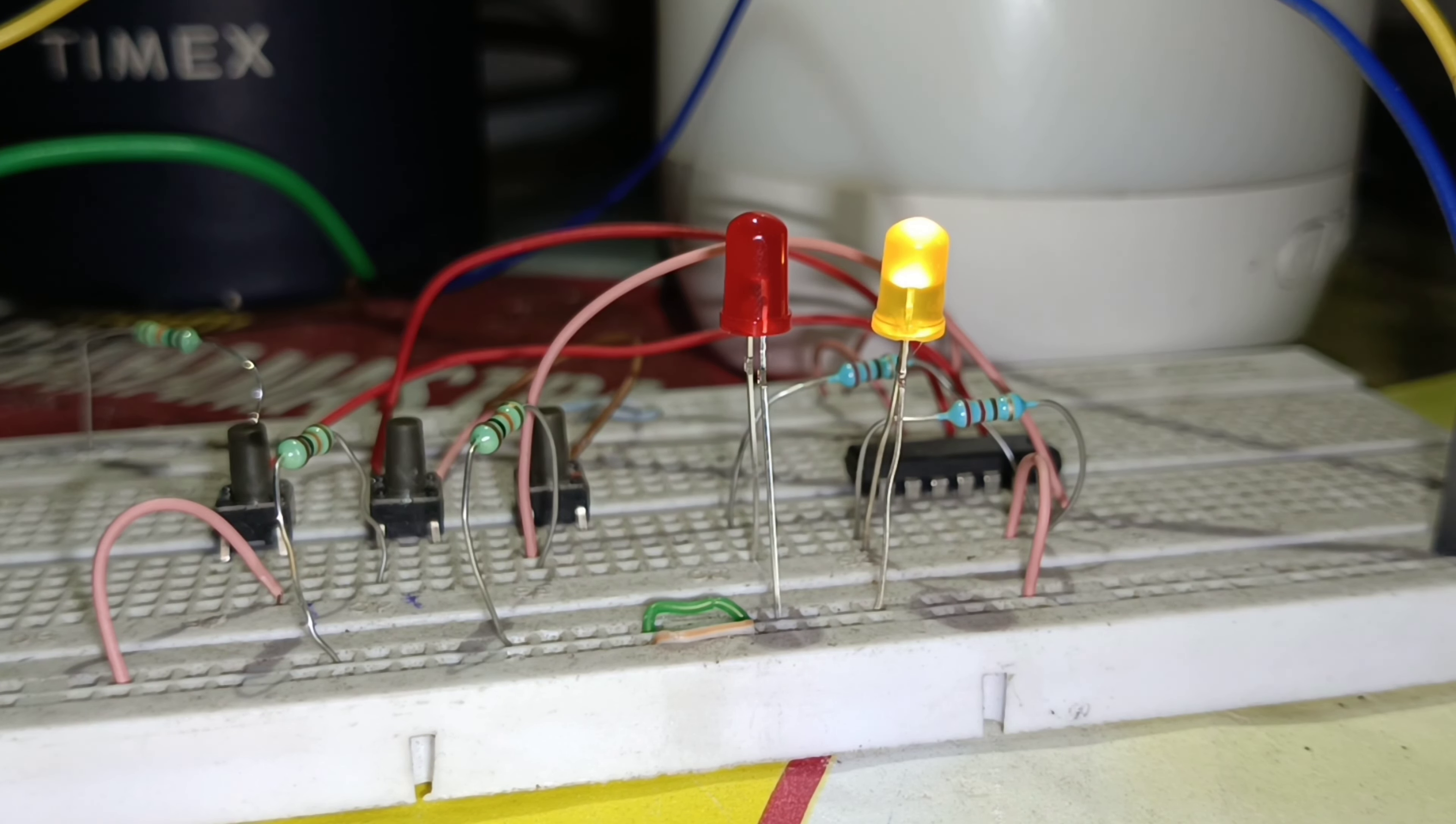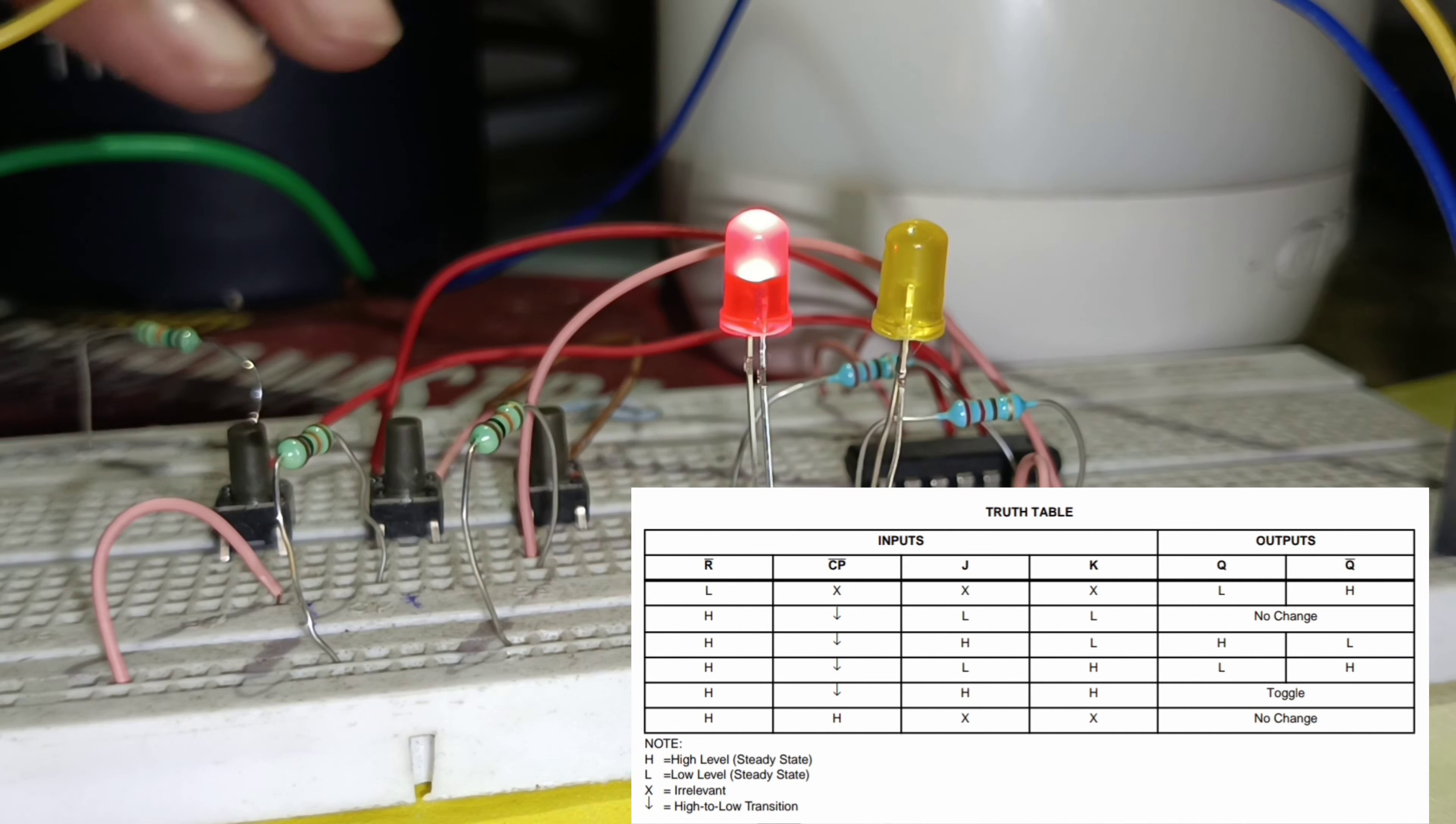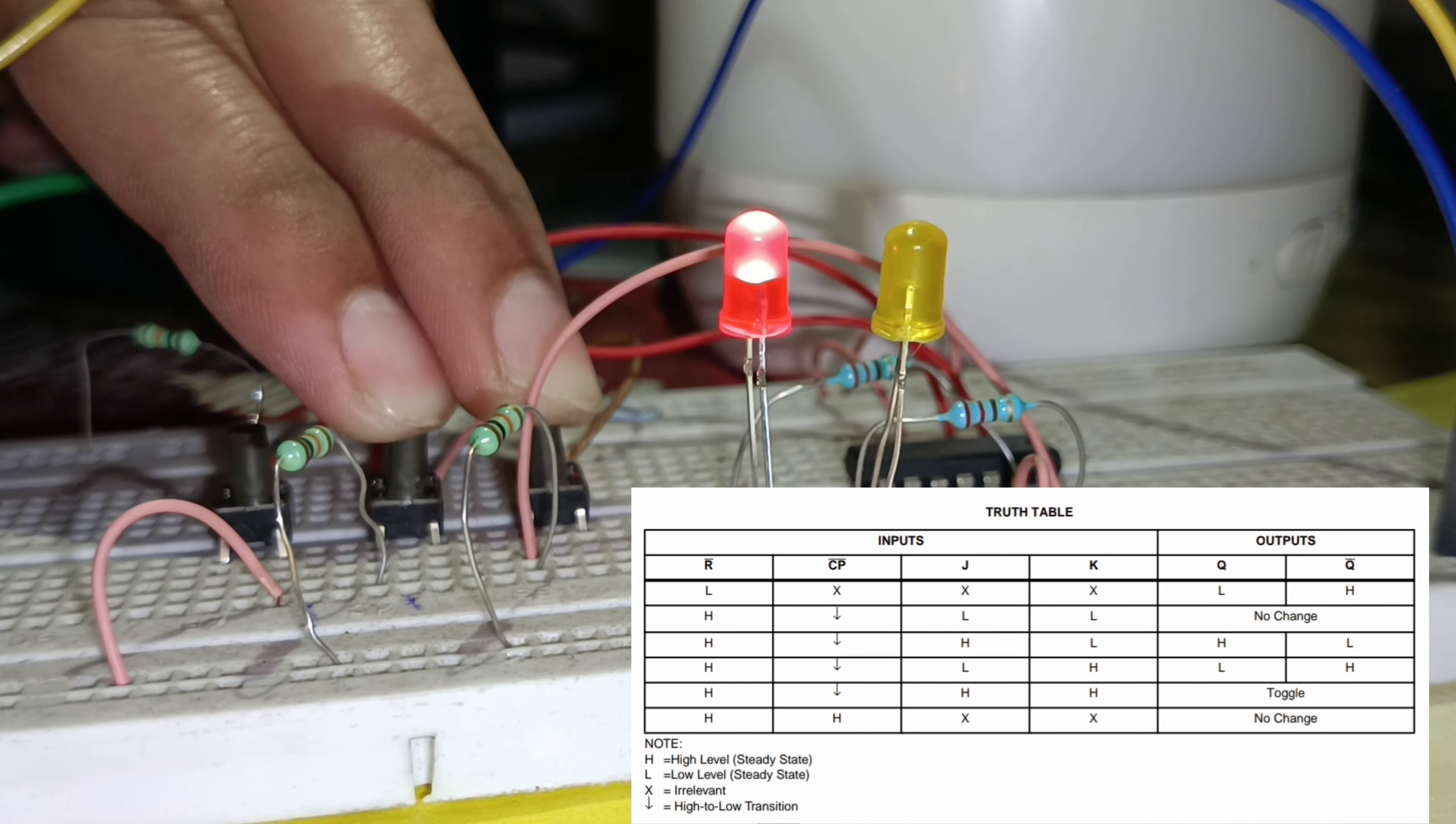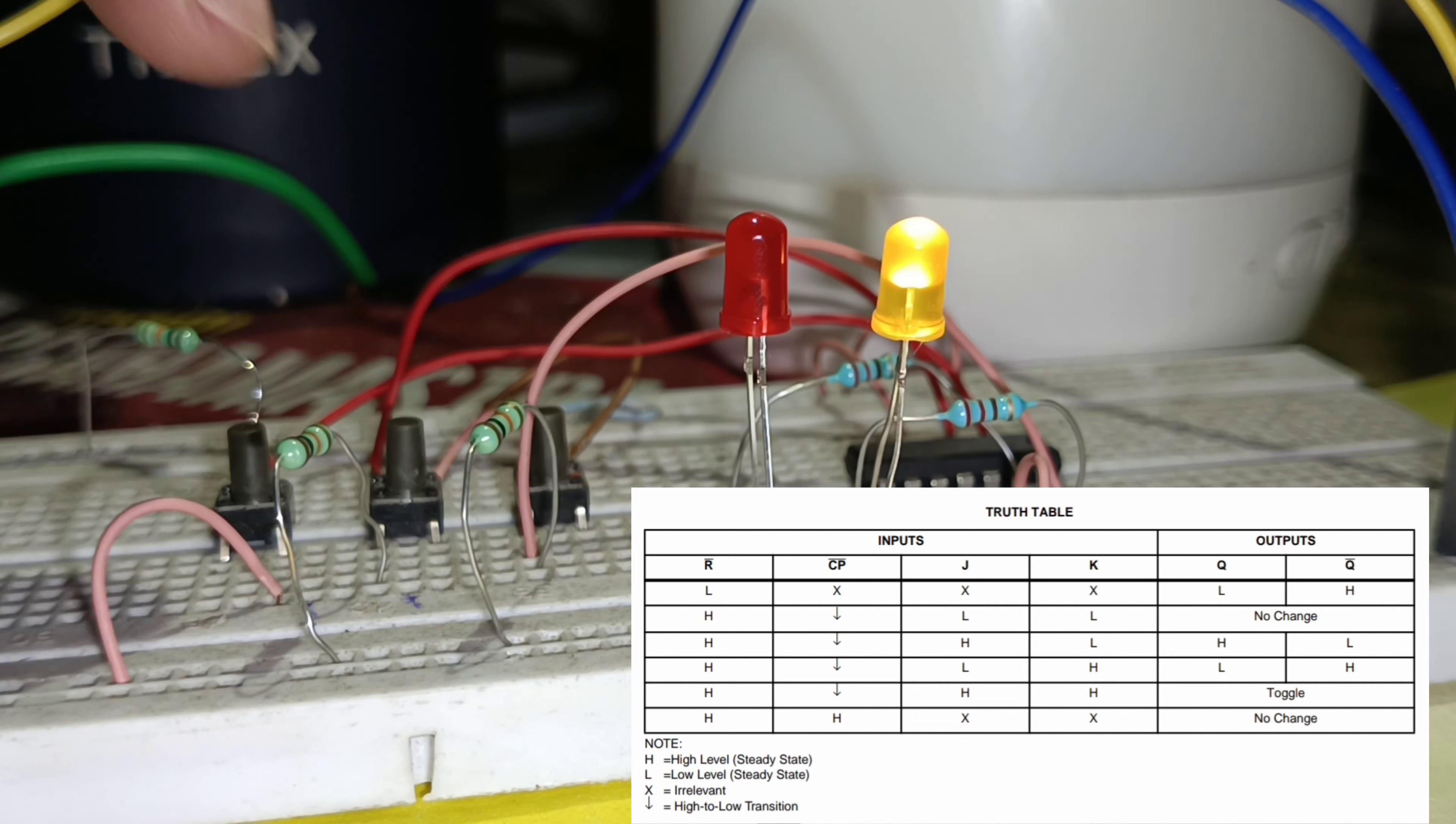Now you can see that when I press the switches according to the truth table of the CD74HC73 IC, it gives the output as per the truth table and the output LEDs also turn on and off accordingly.